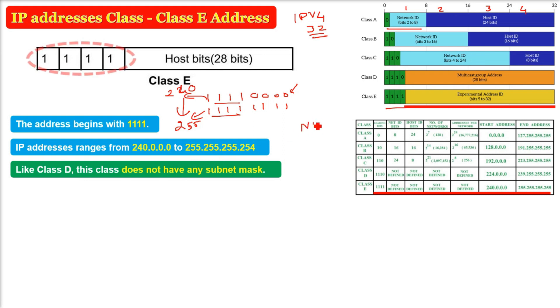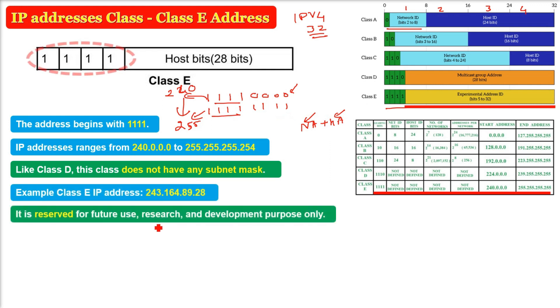There will be a multicasting group address. Every IP address consists of a network address and a host address, so the subnet mask works to find out the network address. But as in Class D, we don't need any network address because it is multicasting. Similarly, in Class E, this is reserved for future use for R&D purposes. That is why we don't need a subnet mask.